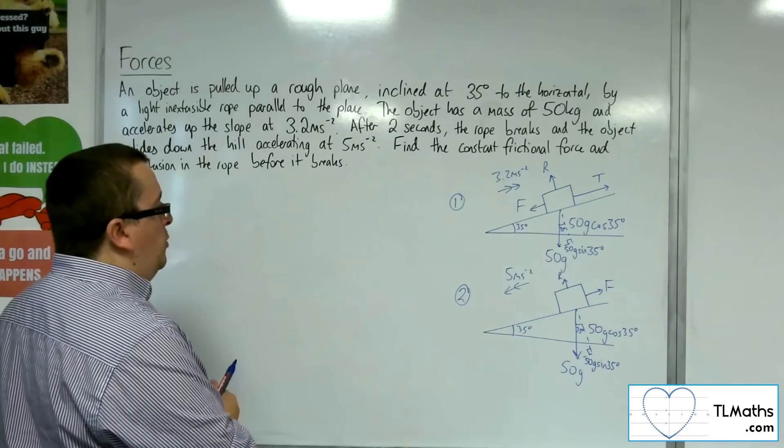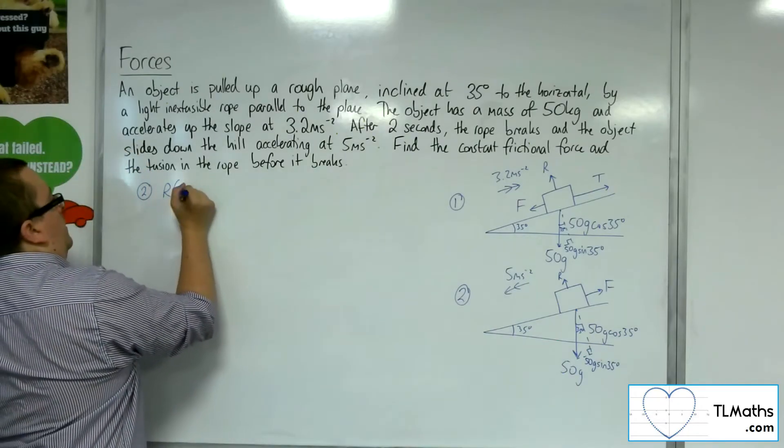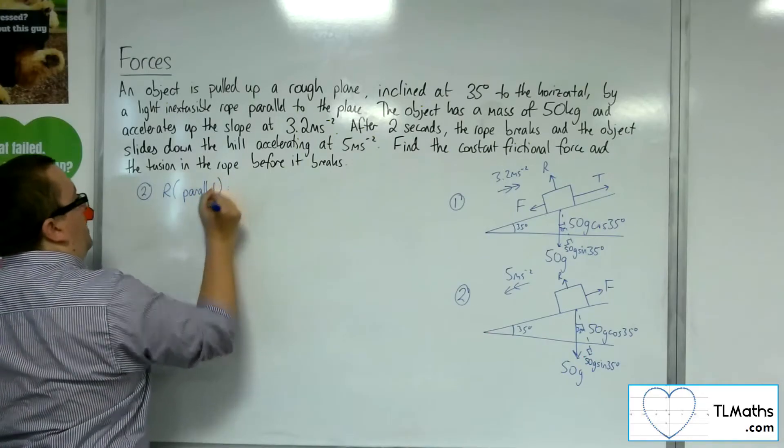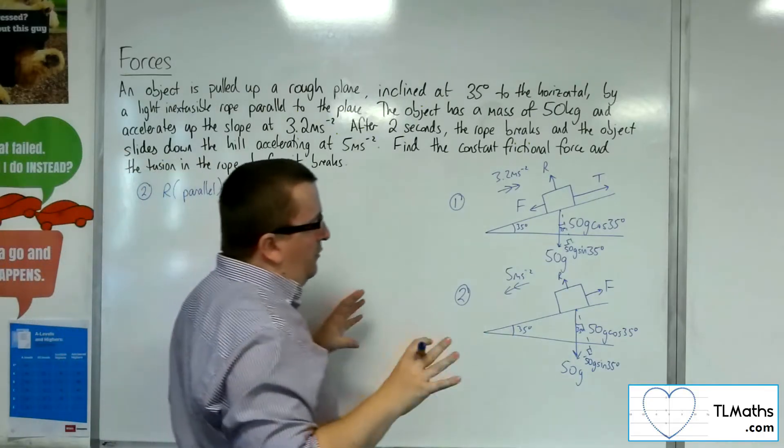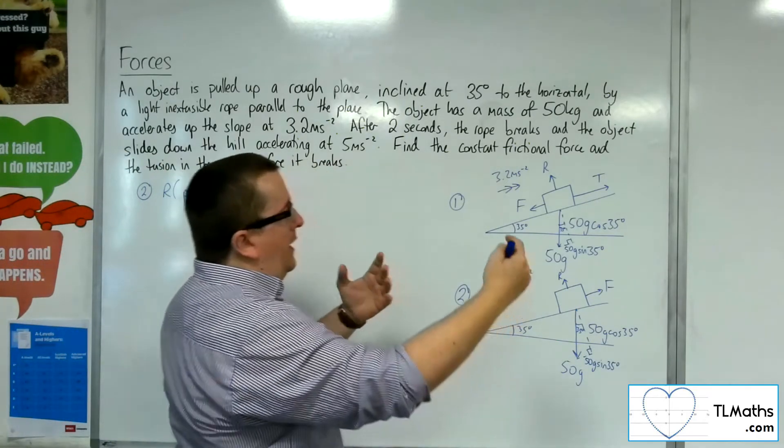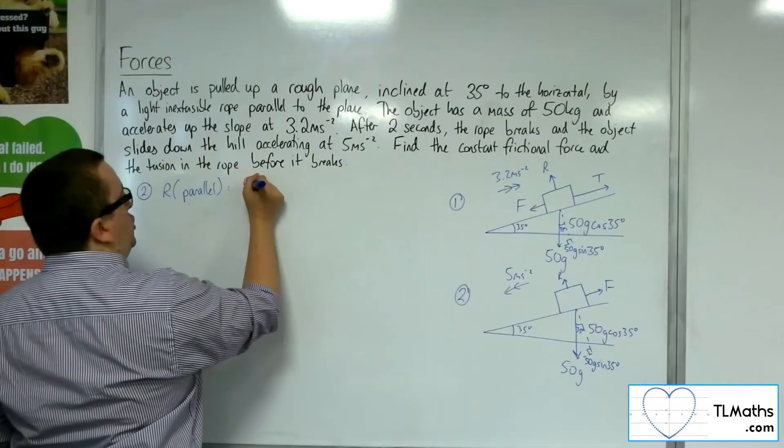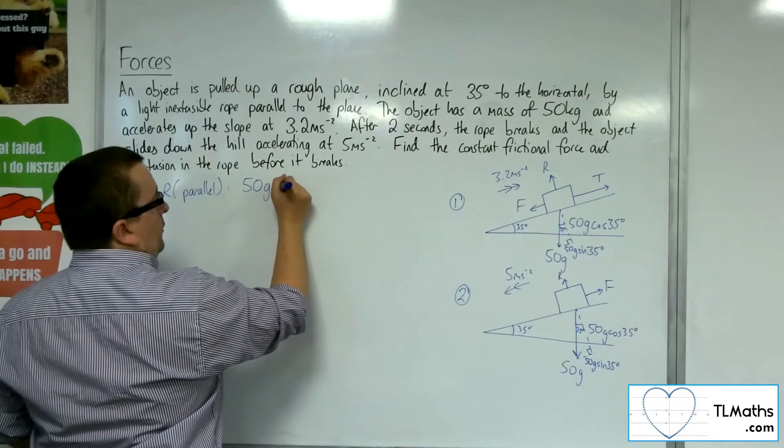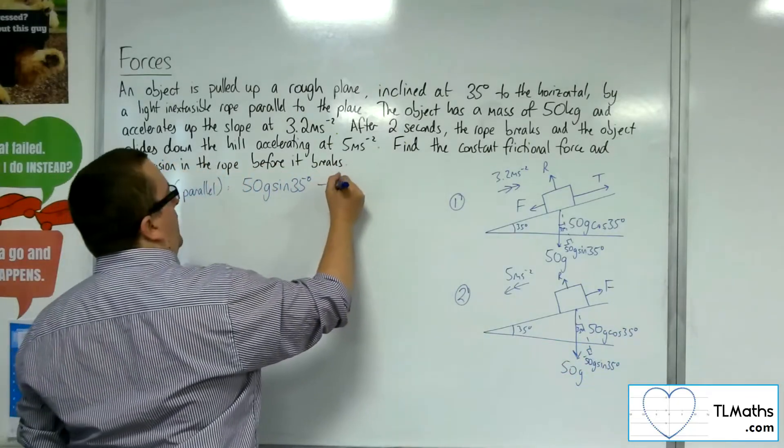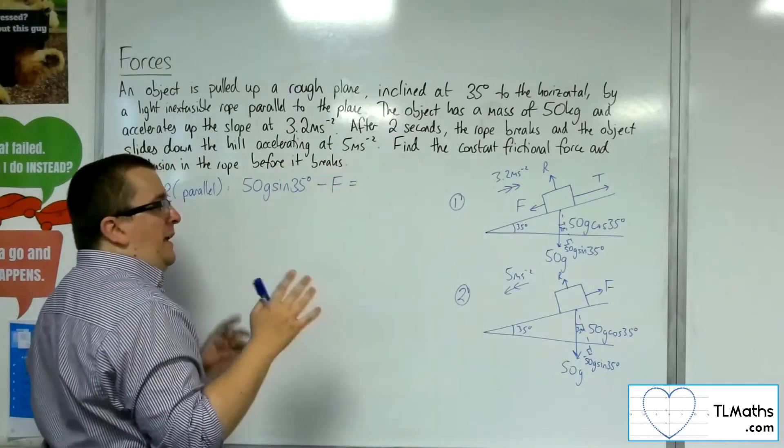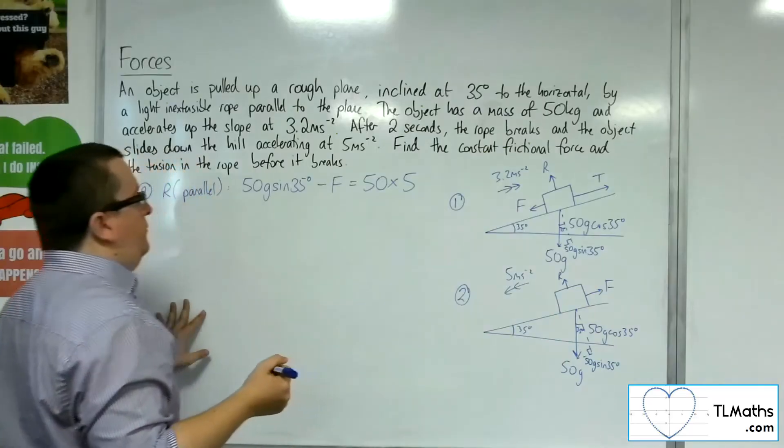If we're going to look at situation 2 first, we're going to resolve parallel to the plane. If I resolve this so that I'm taking down the plane as positive, I've got 50g sine 35 degrees, the component of the weight, and I've got the friction working against me. That's going to be equal to the mass times the acceleration.